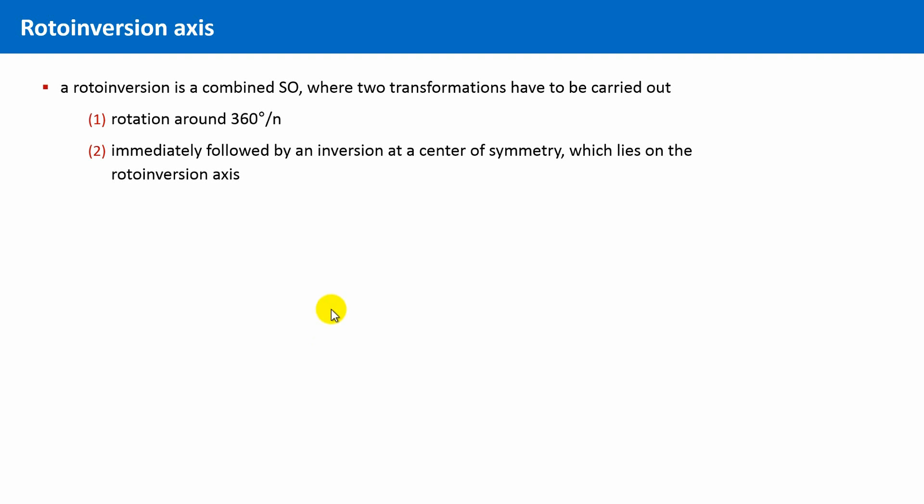The respective symmetry operation, the rotoinversion, is a combined symmetry operation where two transformations have to be carried out. First, a rotation by 360 divided by n degrees, where n is the order of this rotoinversion, followed by an inversion at the center of this object.